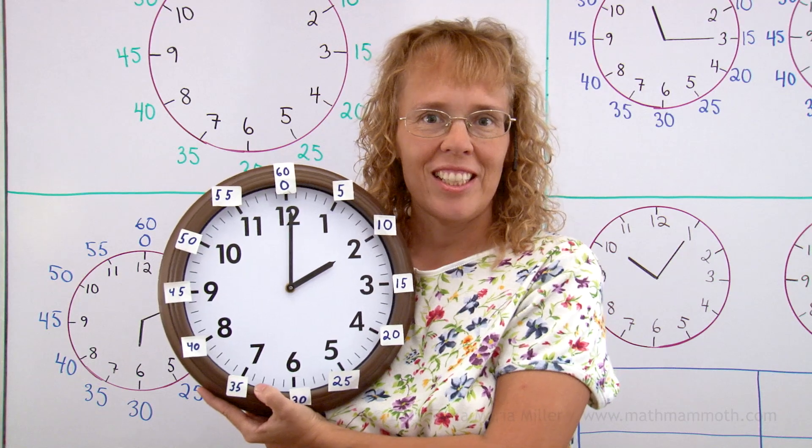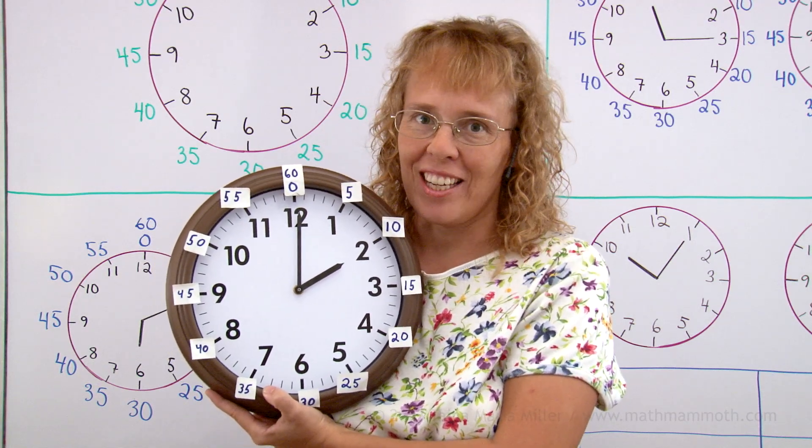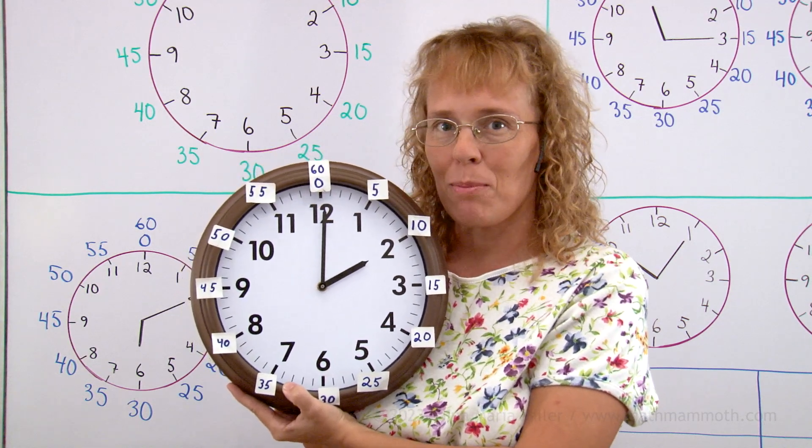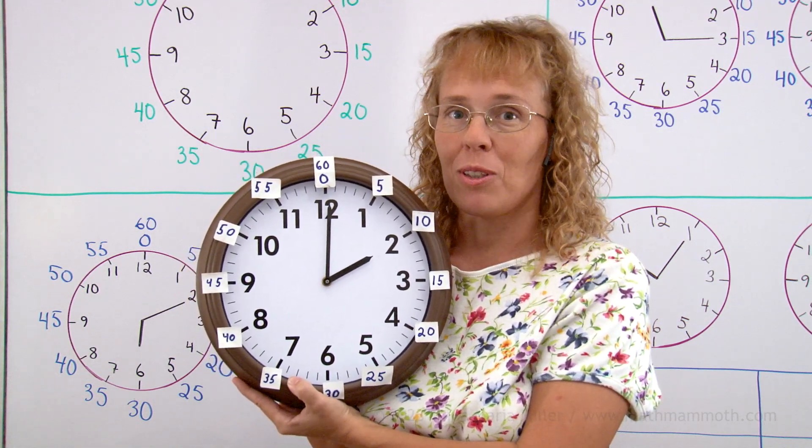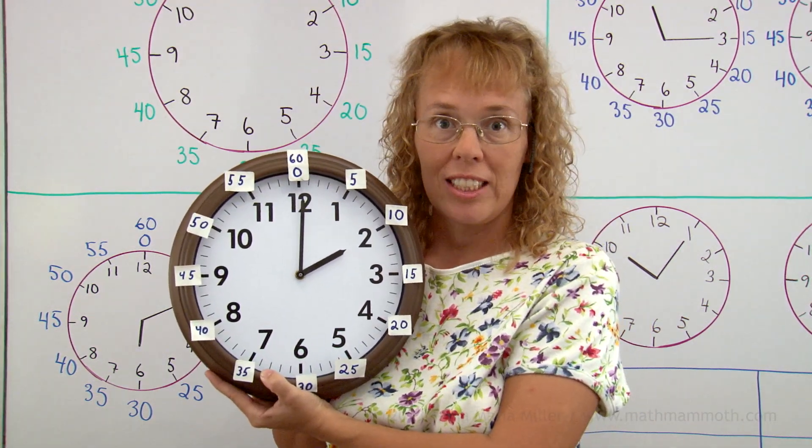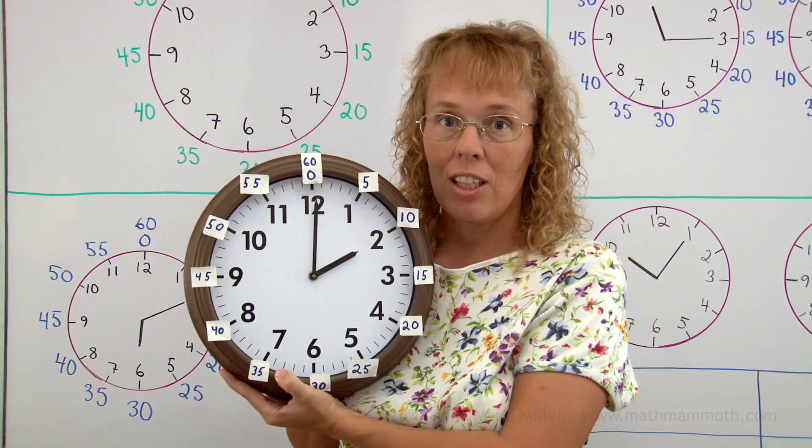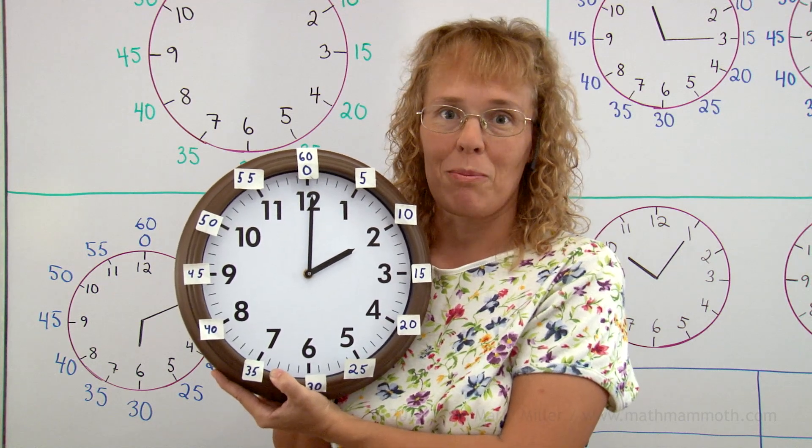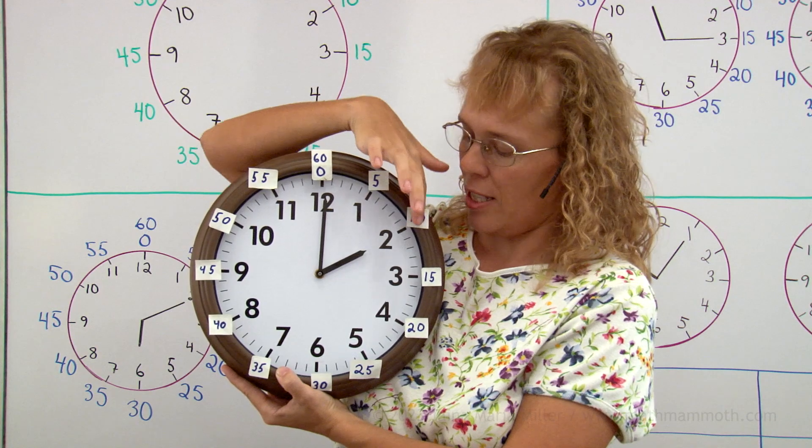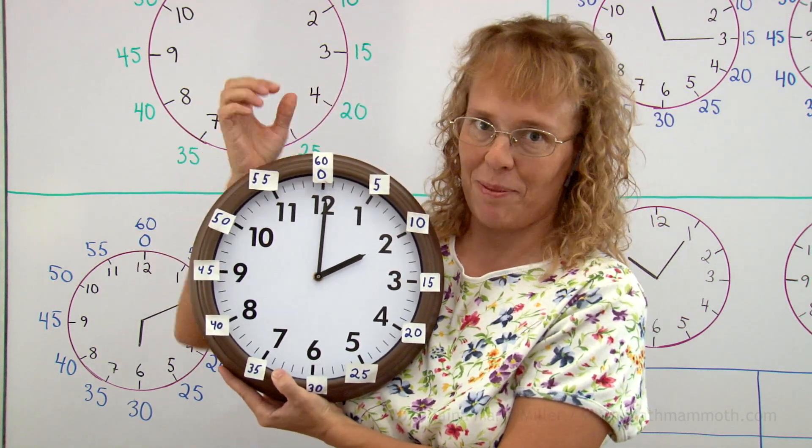Let's now study reading the clock with the minute hand and the hour hand. And in this special clock you see two sets of numbers. The normal numbers from 1 to 12 are for the hour hand. And then I put a set of stickers on the outer rim of this clock. And those are the numbers for the minute hand. And they run from this 0, 60, 5, 10, 15 and so on up to 60.